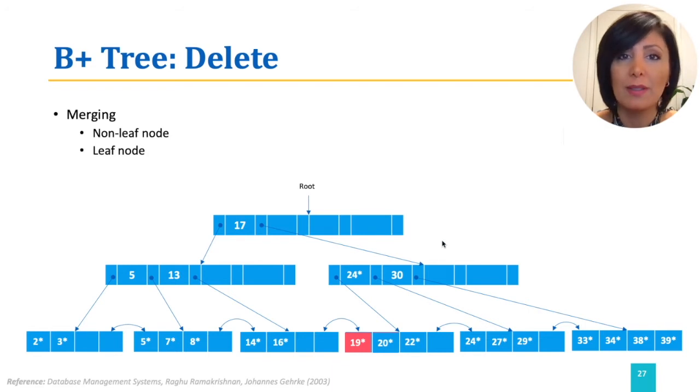However, say we want to remove the entry 21 after that as well. In this case, removal of 19 and 20 will leave only the data entry 22 in the leaf node. Therefore, the leaf node will be below the occupancy threshold.